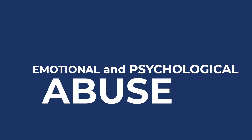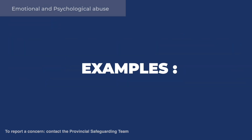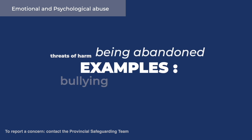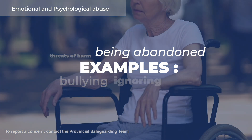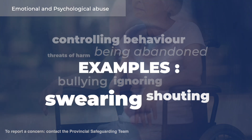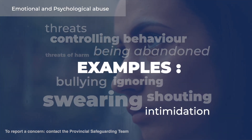Emotional and psychological abuse happens when a person's self-confidence is undermined by threats, humiliation or degrading comments. Examples of emotional abuse are bullying, threats of harm or being abandoned, ignoring, shouting or swearing, controlling behaviour, threats and intimidation.